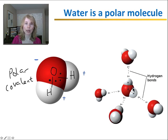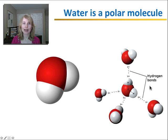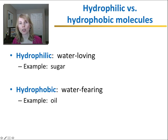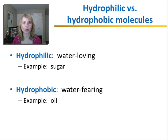One water molecule can form up to four different hydrogen bonds with four different water molecules. The fact that water has this polarity and this ability to form hydrogen bonds has implications for how it interacts with other molecules. We can basically take all molecules and separate them into two classes based on whether or not they can interact with water.